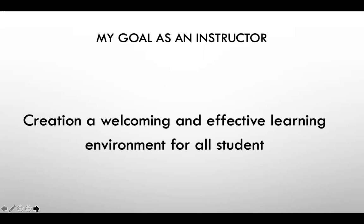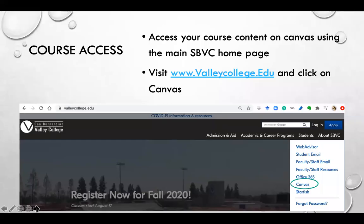But don't worry — we still have great communication tools accessible to us in our online course. I want to start by sharing how you can log into your online platform known as Canvas, so you can access all your course material. You need to first log into your valleycollege.edu website and choose the Canvas option from the drop-down menu. You may use your credentials from Web Advisor to securely log into Canvas and find all the courses you are registered for.